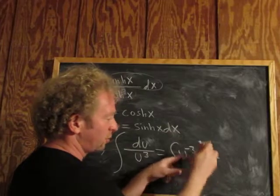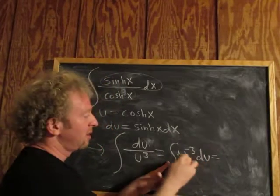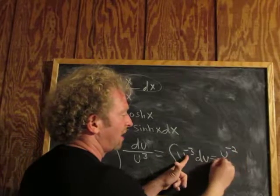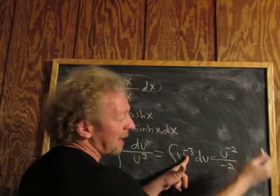Right, so this is equal to... You drop the integral sign, you drop the du. So you get negative 3 plus 1 is negative 2. And then here we get negative 2. Then you add the c plus c.